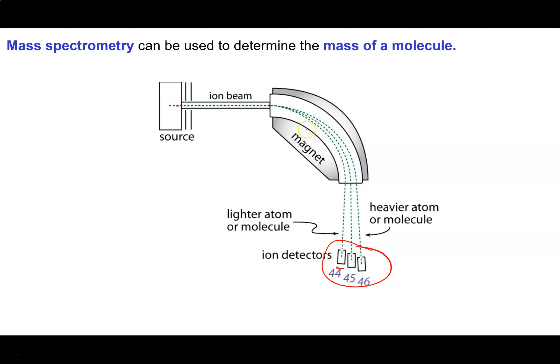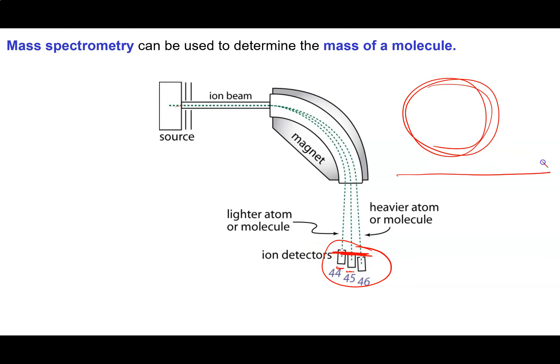The other way is to make molecules travel on a curve. Given a certain force, lighter things curve more while heavier things won't curve as much. Making things move in circles takes up a lot less space than having things move in straight lines, so this approach creates a much smaller instrument. Either way, we can figure out the mass of a molecule.